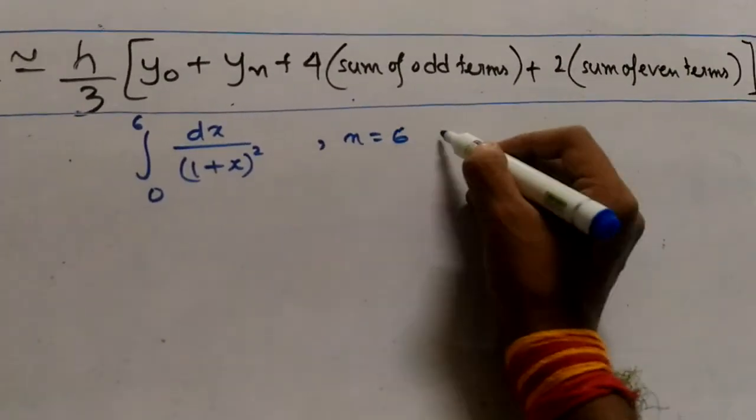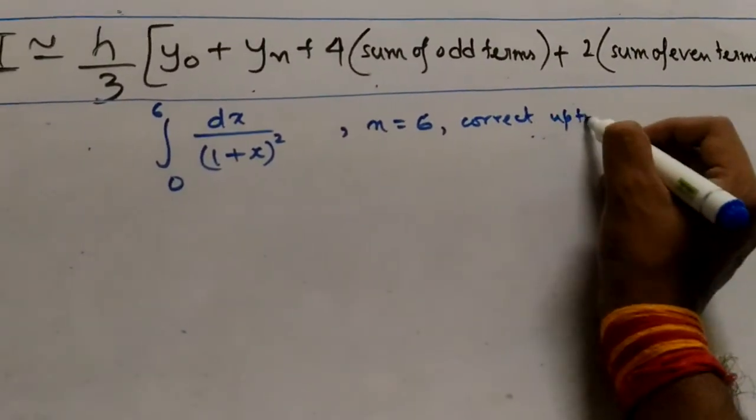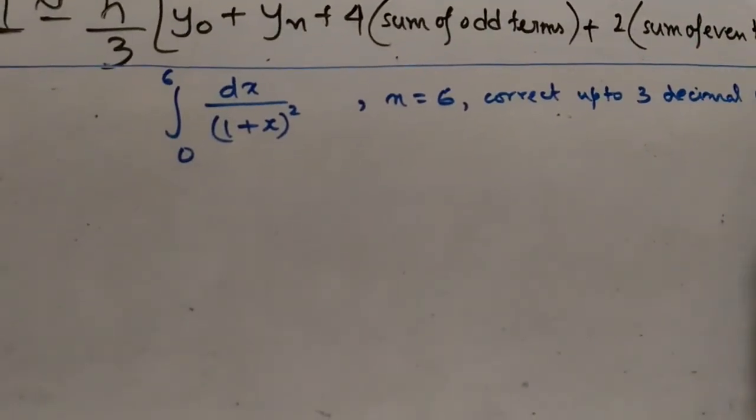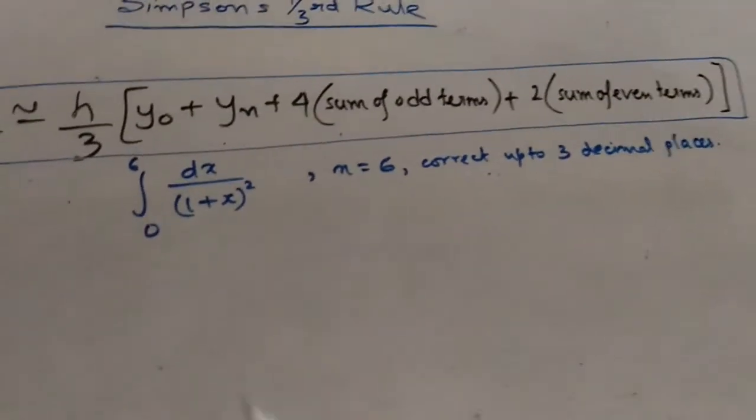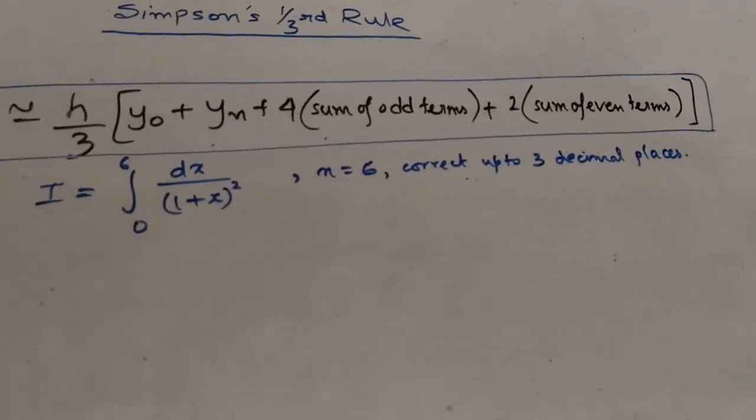And correct up to 3 decimal places. So we have to calculate the value of this integration correct up to 3 decimal places using Simpson's one-third rule.